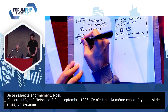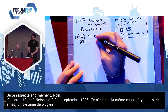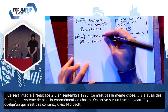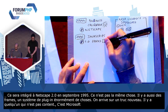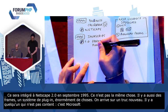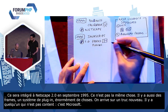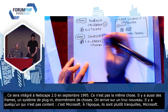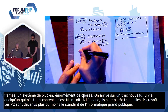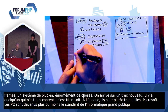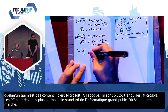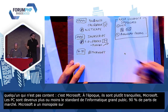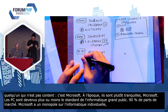Et ça, il y a quelqu'un qui n'est pas content : c'est Microsoft. Pourquoi Microsoft ? Parce que, tout simplement, à l'époque, ils sont plutôt tranquilles. En 94-95, les PC sont devenus plus ou moins le standard de l'informatique grand public depuis les années 80 — 90% de parts de marché quand même. Et Windows est le standard de fait sur ces machines-là. Donc, Microsoft a de fait un monopole sur l'informatique individuelle, ce qui lui permet d'imposer ses autres produits, du style Microsoft Office.